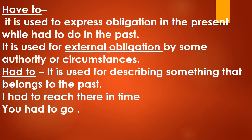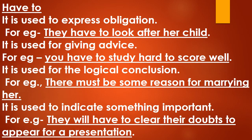Now let us talk about 'have to' and 'had to.' Have to is used to express obligation in the present, while had to expresses obligation in the past. It is used for external obligation by some authority or circumstances. Example of had to: 'I had to reach there in time,' 'You had to go.' Uses of have to: expressing obligation — 'They have to look after her child'; giving advice — 'You have to study hard to score well.'